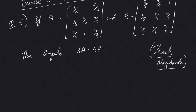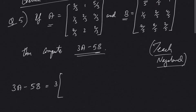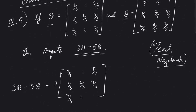Matrix A is given and matrix B is given. Compute the value 3A minus 5B. In the previous video I discussed how we multiply a matrix by a scalar. So that will be just 3 times of the matrix: 2/3, 1, 5/3, 1/3, 2/3, 4/3, 7/3, 2.